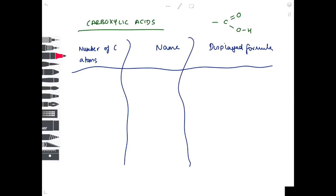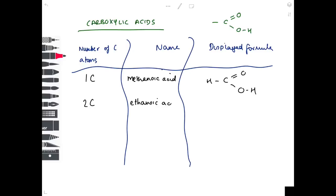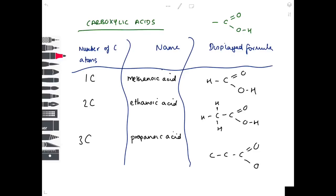Carboxylic acids have the functional group –COOH — a carbon double-bonded to oxygen with an –OH group attached. The series: methanoic acid (1C), ethanoic acid (2C), propanoic acid (3C). When drawing these, ensure the carbon has four bonds total — the functional group accounts for three, so one additional H is needed for methanoic acid.